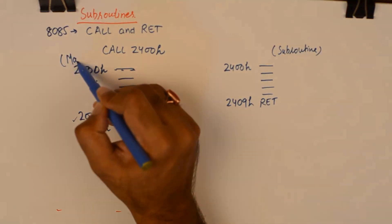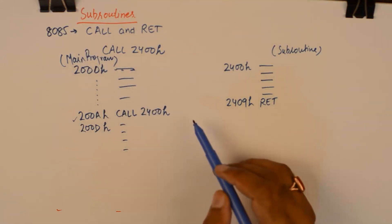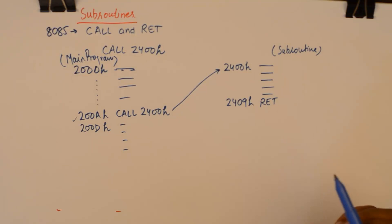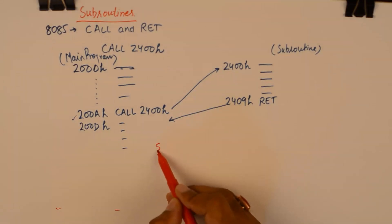And this is our main program. Call will take us here and return will bring us back here, immediate to the call instruction. But how? Now before the call instruction is executed and microprocessor branches itself to the subroutine's location, it takes help of the stack pointer register.